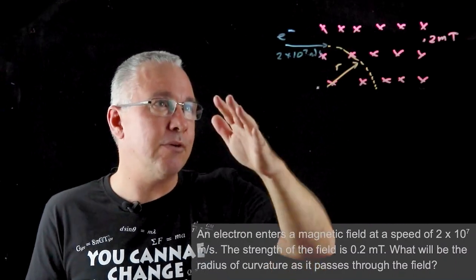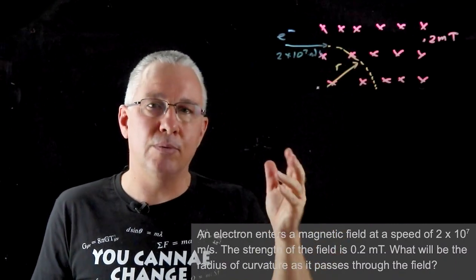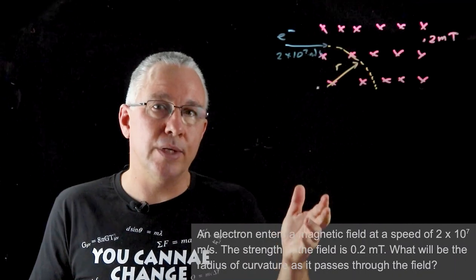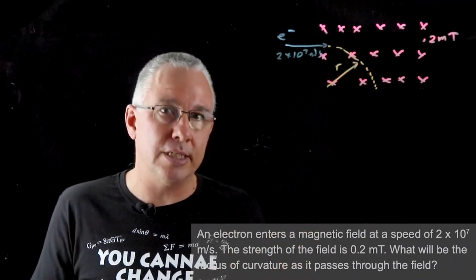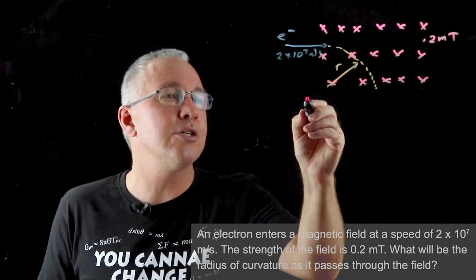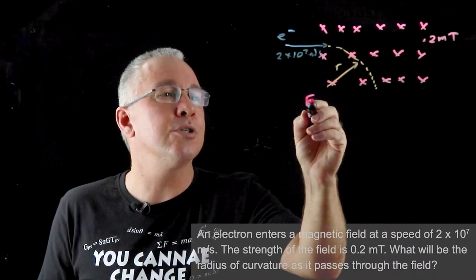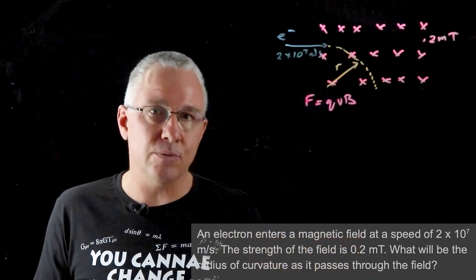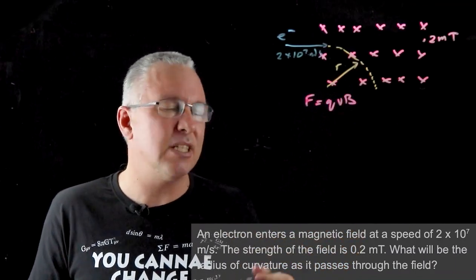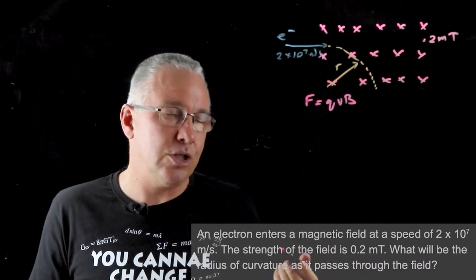Now that we've got that written down, we've got our data presented here, and we also now need to work out what equation. There are two equations in this case that we need to consider. The first is the Lorentz force equation, and that says simply that the force is equal to QVB. Now it is sine theta, but since this is at right angles we can ignore the theta - it's actually sine 90 which is 1.